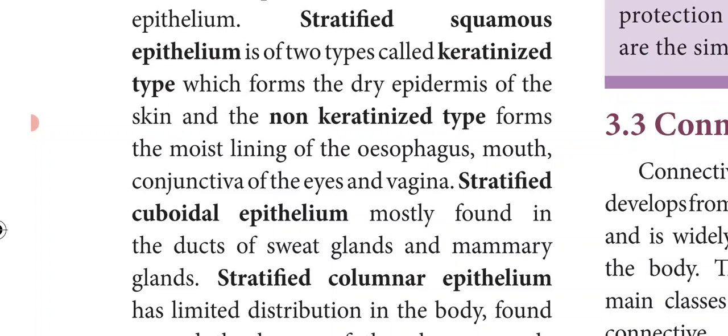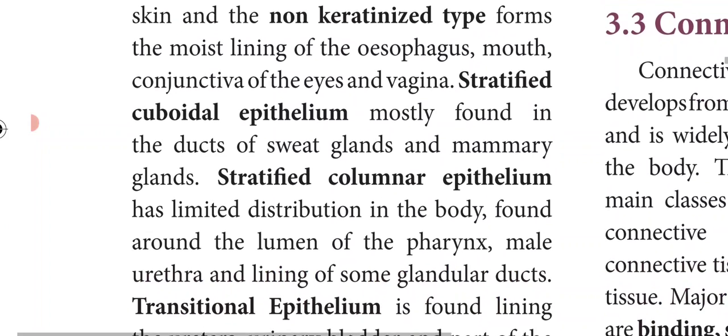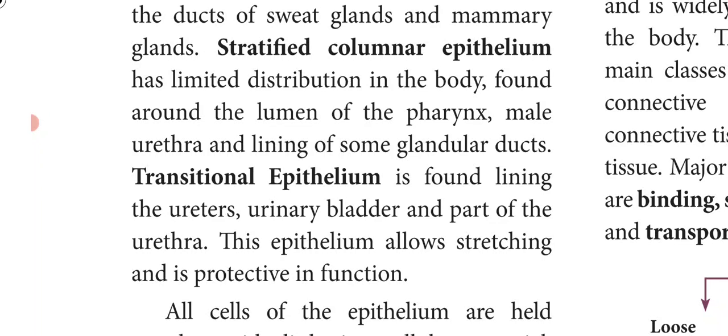Stratified columnar epithelium has limited distribution in the body. It is found around the lumen of the pharynx, male urethra and lining of some glandular ducts.